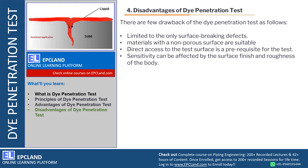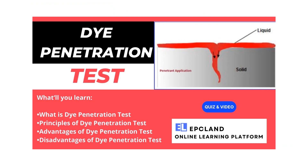Now let us look at a few disadvantages associated with Dye Penetration Test. First, it is limited to surface-breaking defects only — any defect beneath the surface cannot be identified. Only non-porous surfaces are suitable, as capillary action and dwell time perform better there. Direct access to the test surface is a prerequisite so the penetrant can be applied. Also, the sensitivity can be affected by the surface finish and roughness of the body.